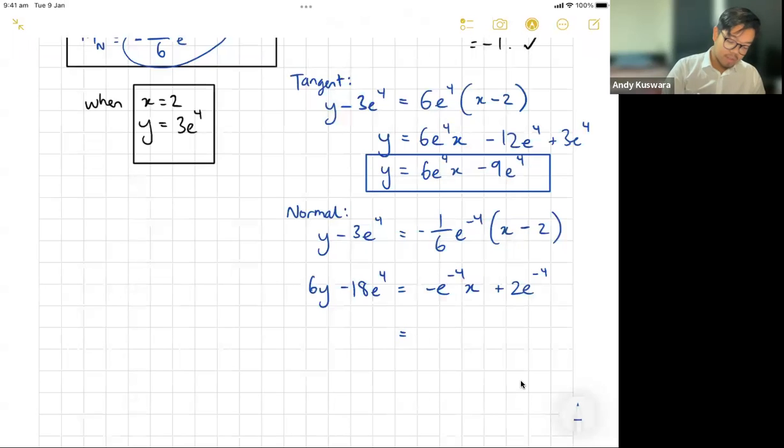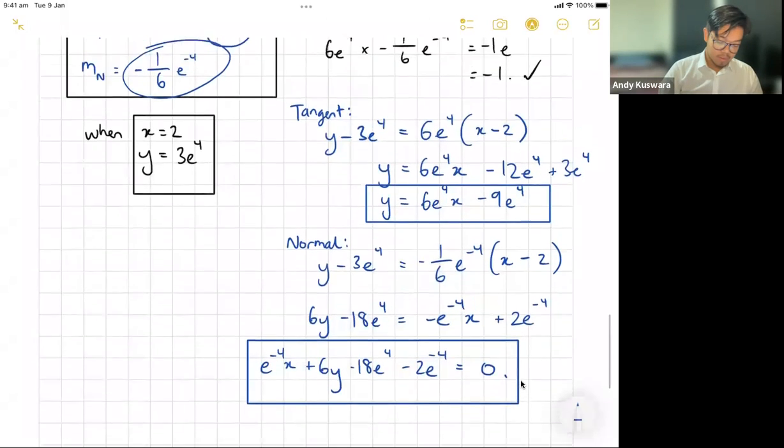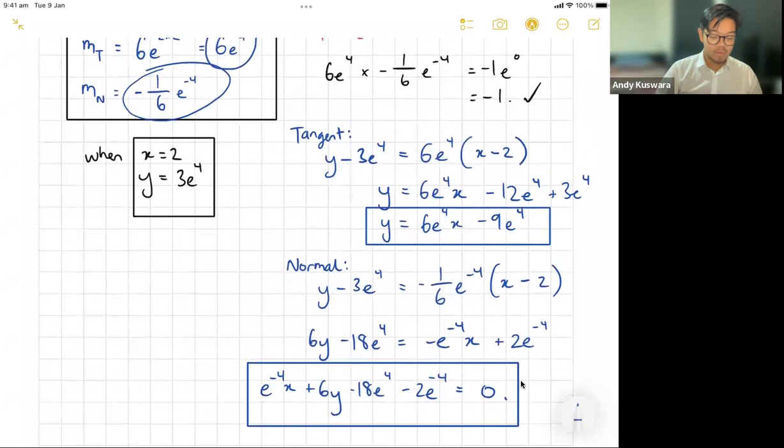Be careful with all your negatives. From this case, at this point here, I'm just going to push everything over to the left hand side, so I'm going to have e to the negative 4 times x, because it's positive now, plus 6y, and I have minus 18e to the 4 and minus 2e to the negative 4. I would be happy to leave that. It's got my x, my y, and my constant together.